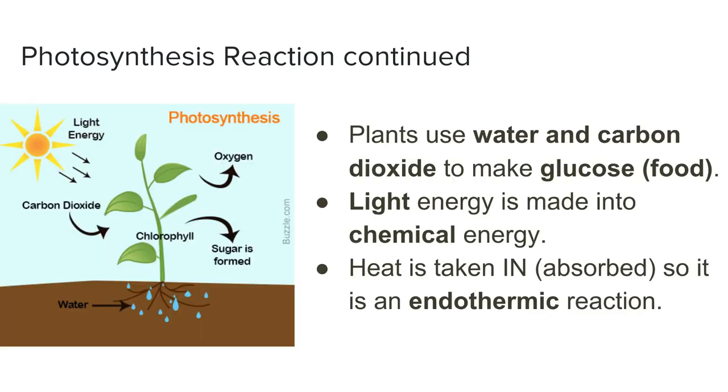All right, continuing on with photosynthesis. So plants use the water and the carbon dioxide that we saw in the equation to make glucose, which is a fancy word for their food. It's a type of sugar. Light energy is transformed into chemical energy.